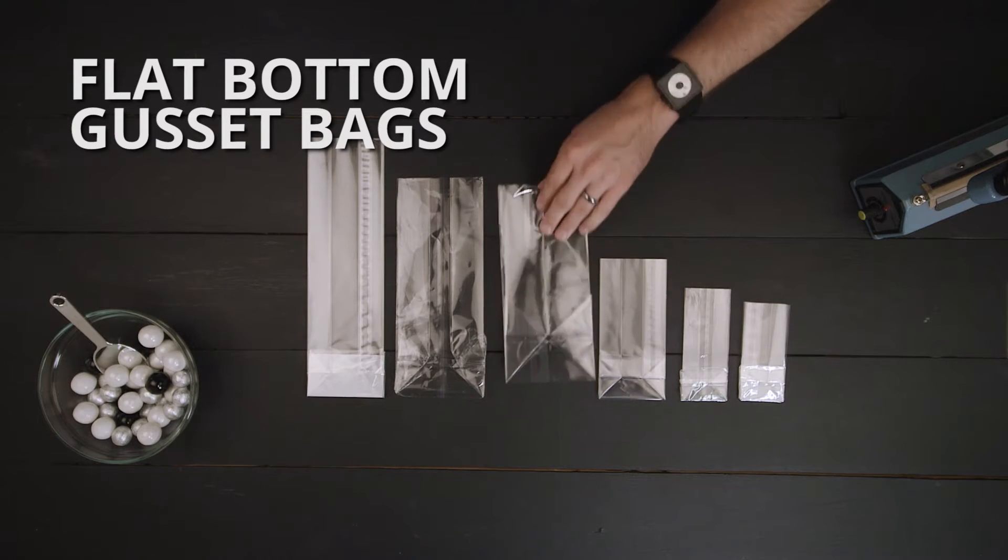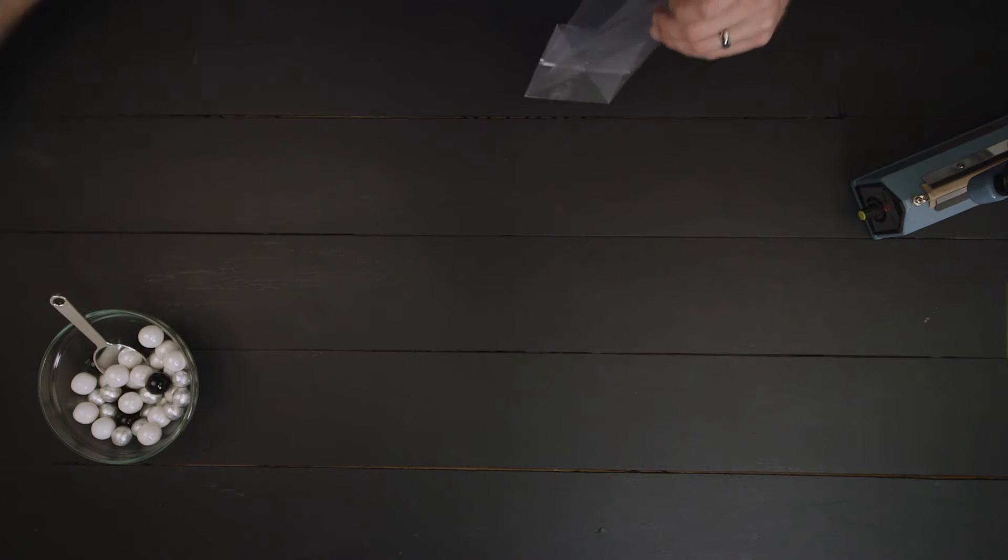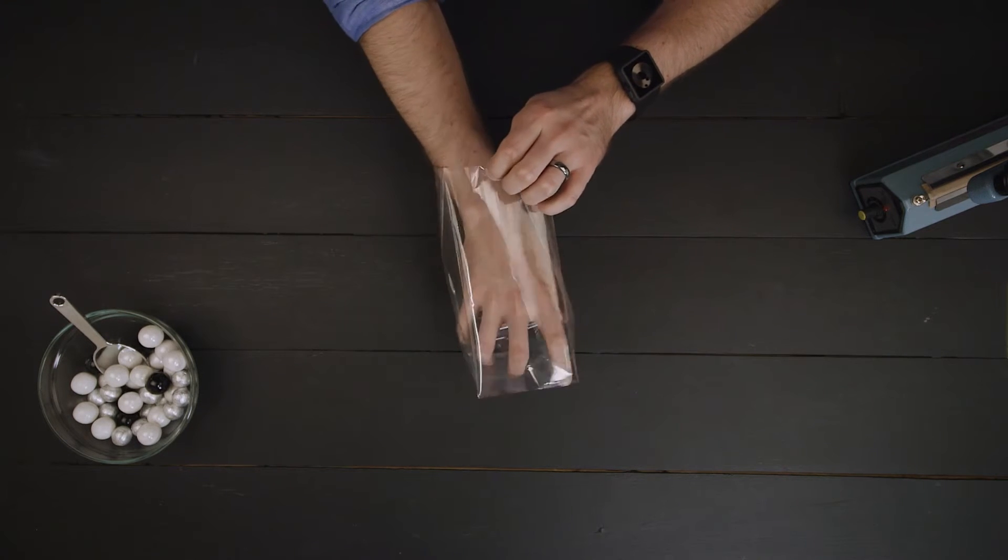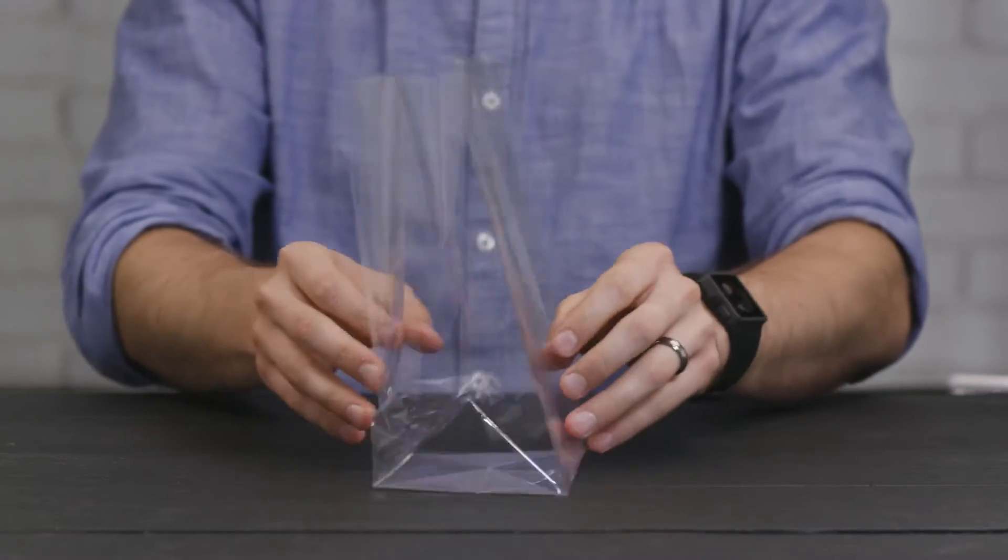Flat bottom gusset bags are bags that feature additional material on the sides to increase the volume the bag can hold. The flat bottom allows the bag to stand on its own, making it perfect for displaying products.